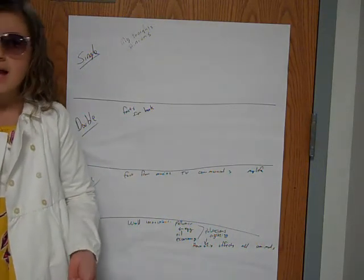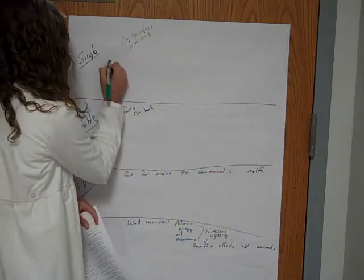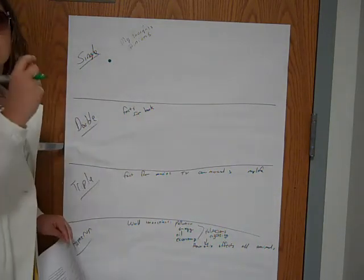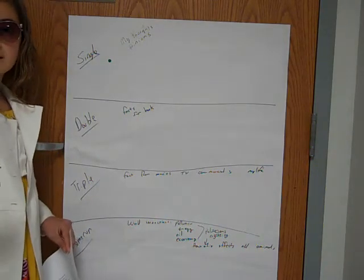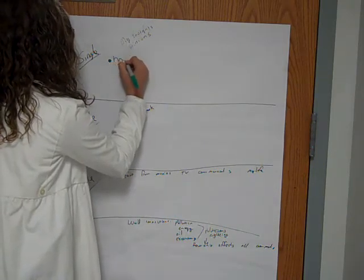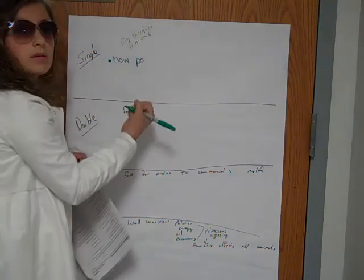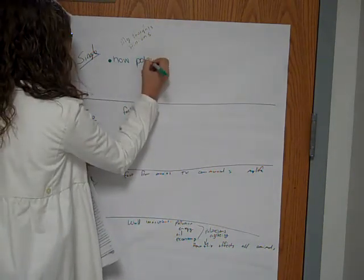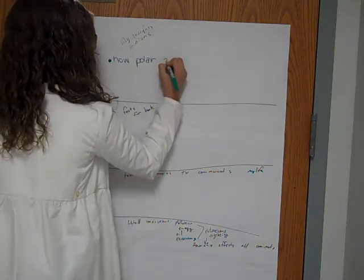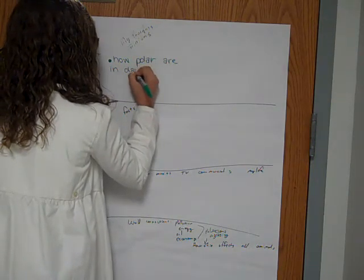Yes, that's exactly, from global warming. How polar bears are in danger. So, thoughts and opinions. What was it again? Because our thoughts about how they get extinct. How polar bears, what did you say Annie again? How polar bears are in danger. Okay, so how polar bears are in danger. Okay, so now our double facts from the book.